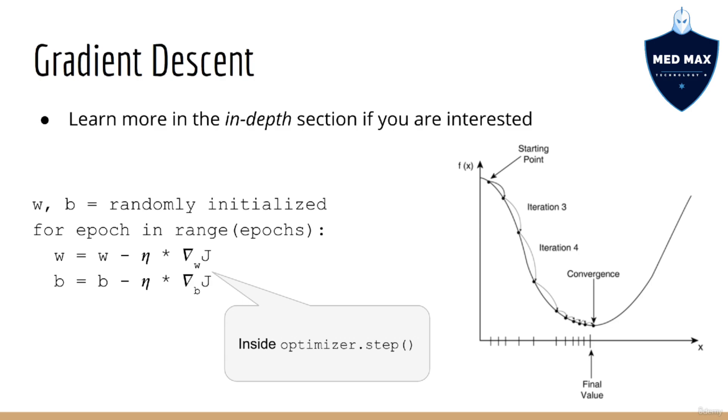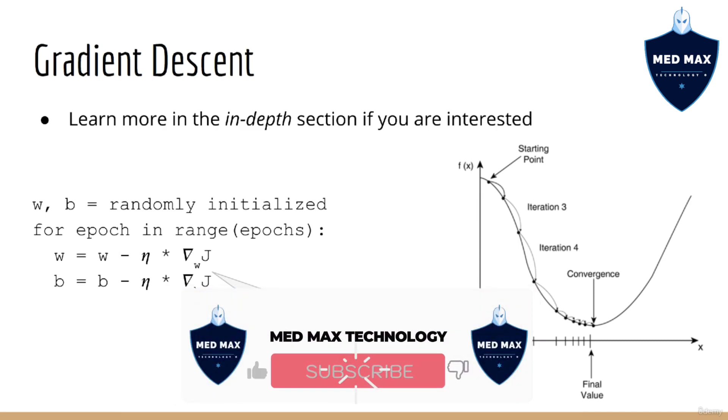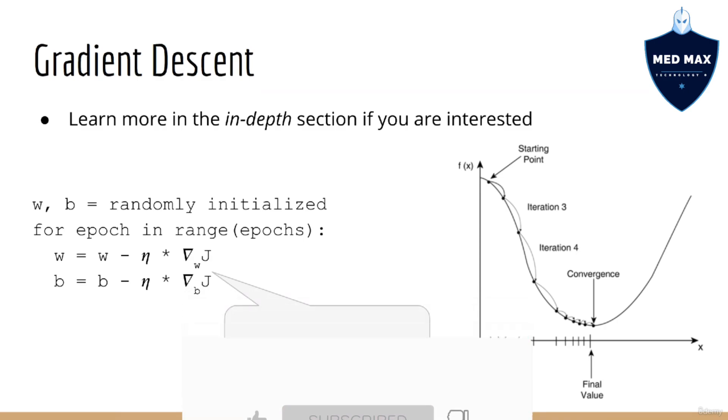This is really all that's happening. For epoch in range epochs, and then set w equal to w minus eta times the gradient of J with respect to w, and set b to b minus eta times the gradient of J with respect to b.